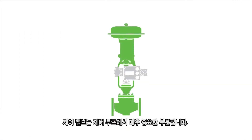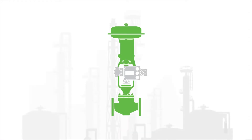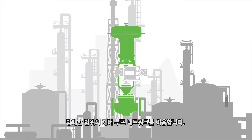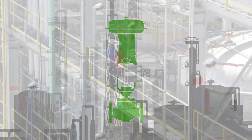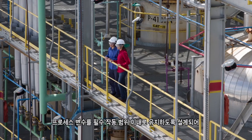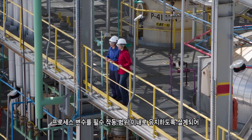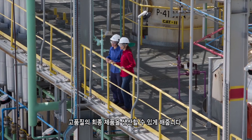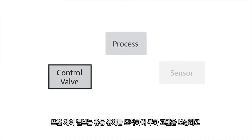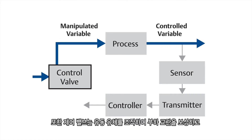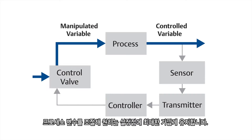The control valve is a critical part of the control loop. Processing plants utilize a vast network of control loops to produce an end product for market. These control loops are designed to keep a process variable such as pressure, flow, level, or temperature within a required operating range to ensure a quality end product is produced. The control valve manipulates a flowing fluid to compensate for the load disturbance and keeps the regulated process variable as close as possible to the desired setpoint.